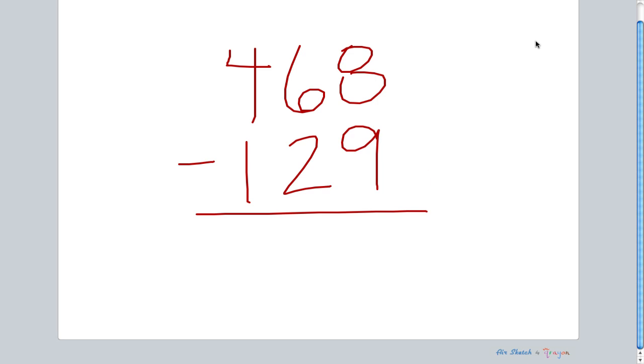The second thing I want to do is make sure that in each of my columns the larger number is also on top. So I want to scan my 1's column, my 10's column, and my 100's column. And if any of those situations has a smaller number on top, that tells me I need to borrow.